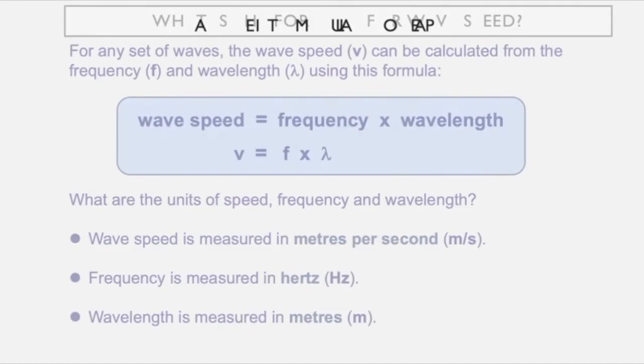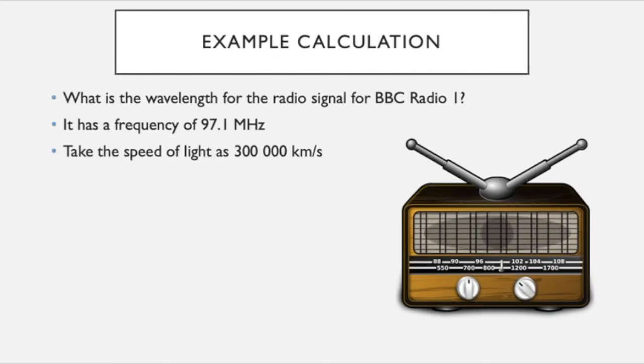What's the wavelength for the radio signal for BBC Radio 1? So it has a frequency of 97.1 megahertz and let's say that the speed of light is 300,000 kilometers per second.